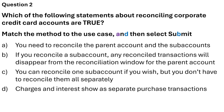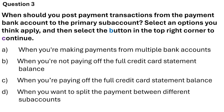Question 2: Which of the following statements about reconciling corporate credit card accounts are true? Options include: reconcile the parent account and sub accounts; if you reconcile a sub account, any reconciled transactions will disappear from reconciliation; you can reconcile one sub account if you wish; charges and interest show as separate purchase transactions. The correct answers are option B — if you reconcile a sub account, any reconciled transactions will disappear from the reconciliation window for the parent account — and option D: charges and interest show as separate purchase transactions.